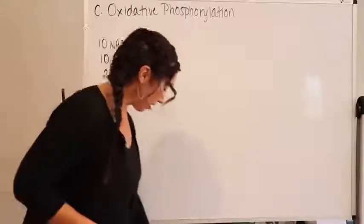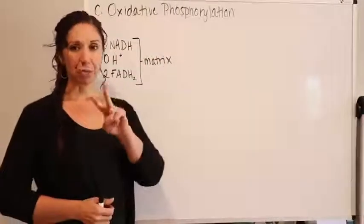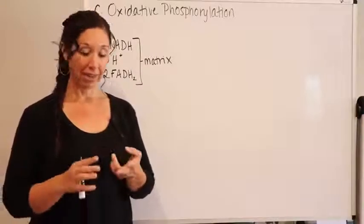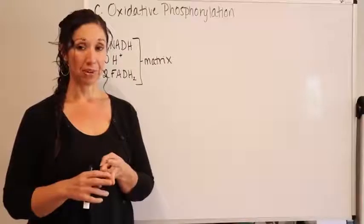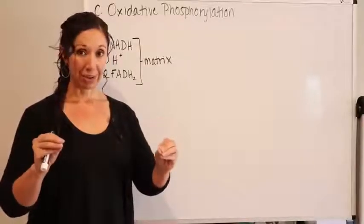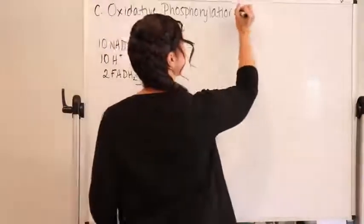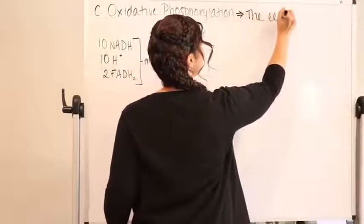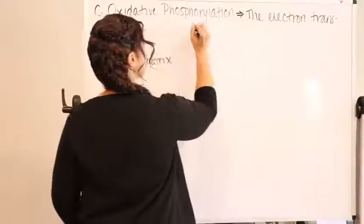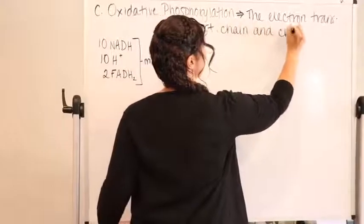Oxidative phosphorylation is actually a two-step process. It involves something called an electron transport chain, and then something called chemiosmosis. We're going to go into both of those because they're both distinct, but they're dependent upon each other. So: oxidative phosphorylation involves the electron transport chain and chemiosmosis.